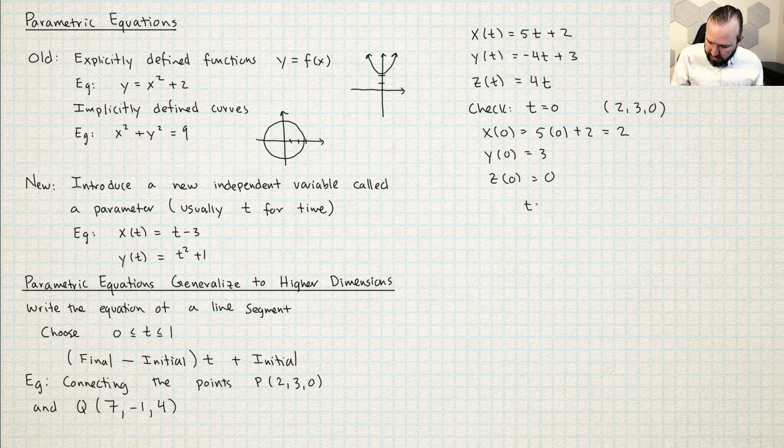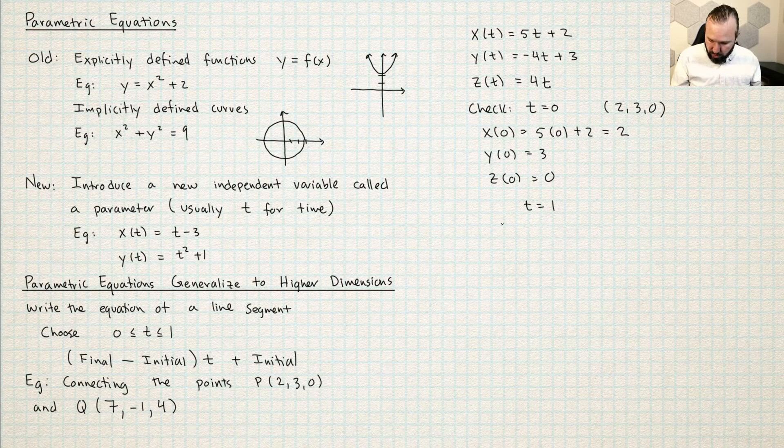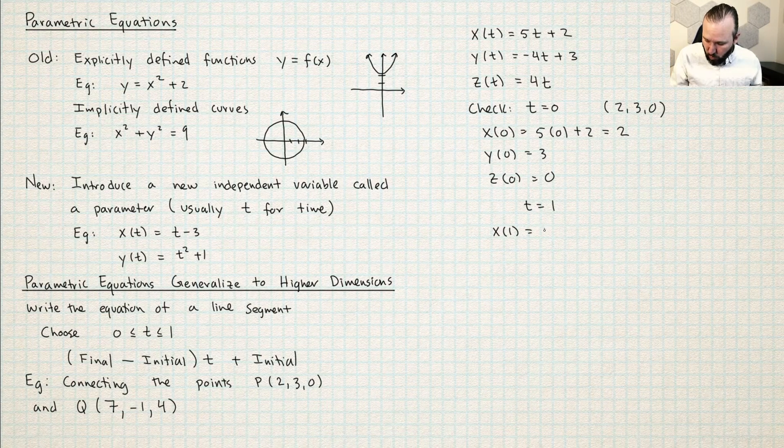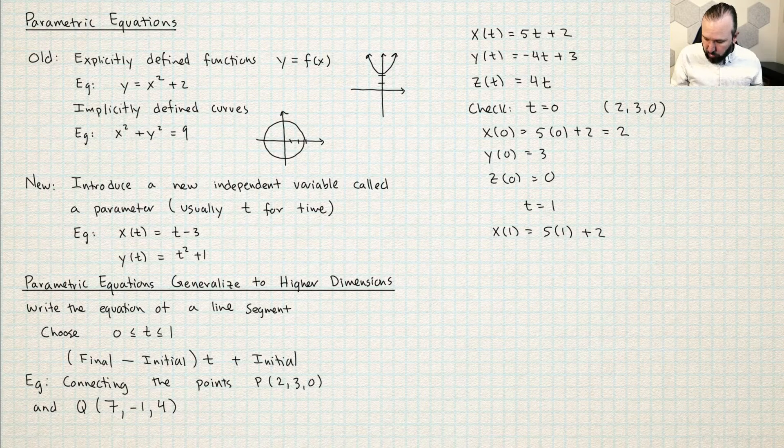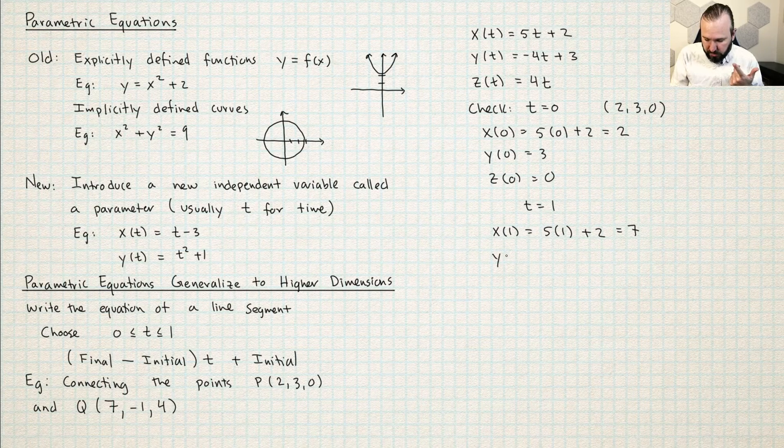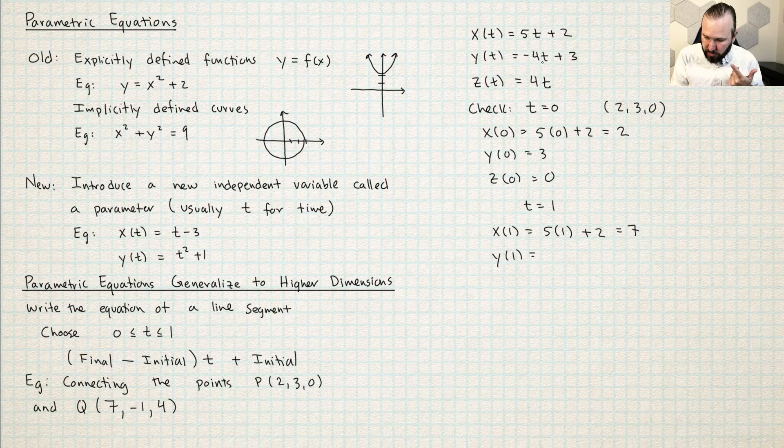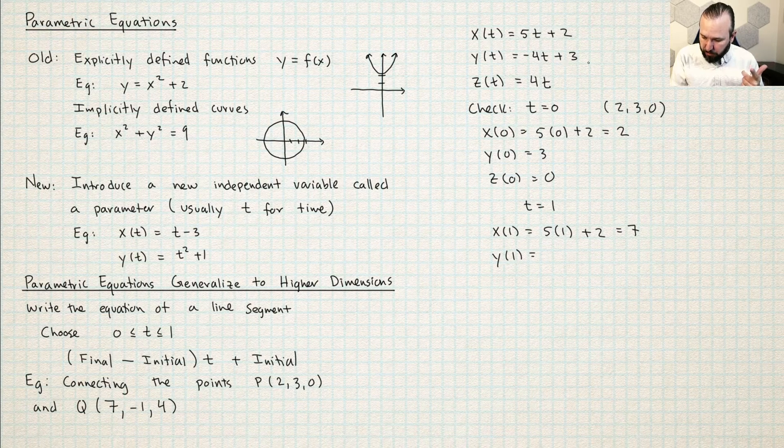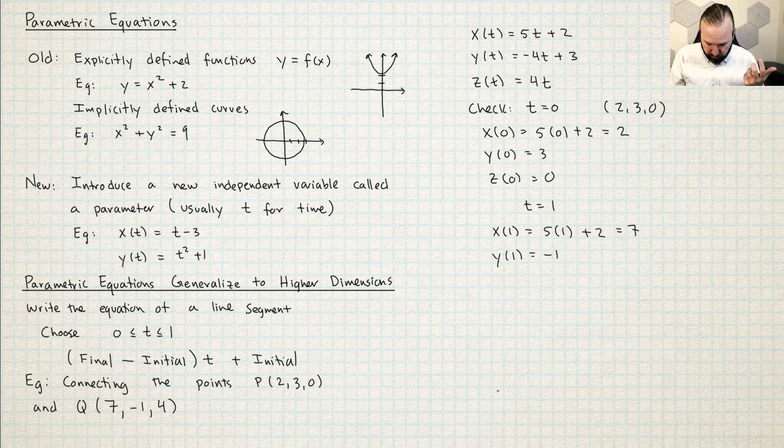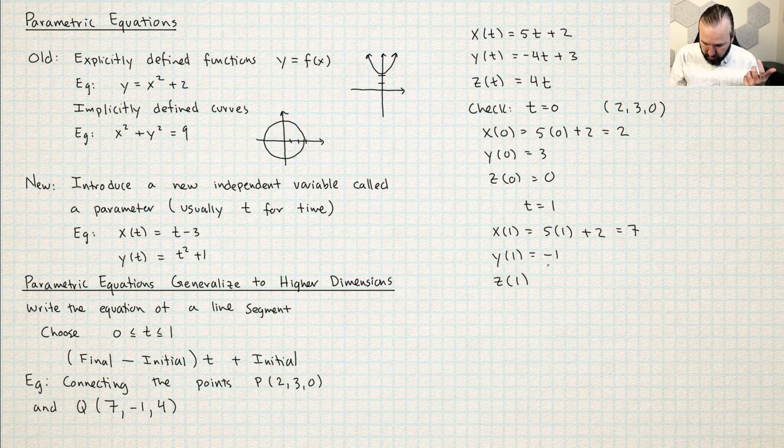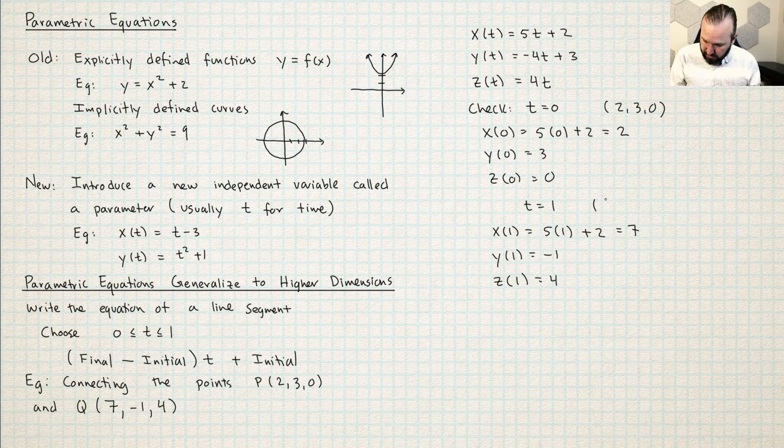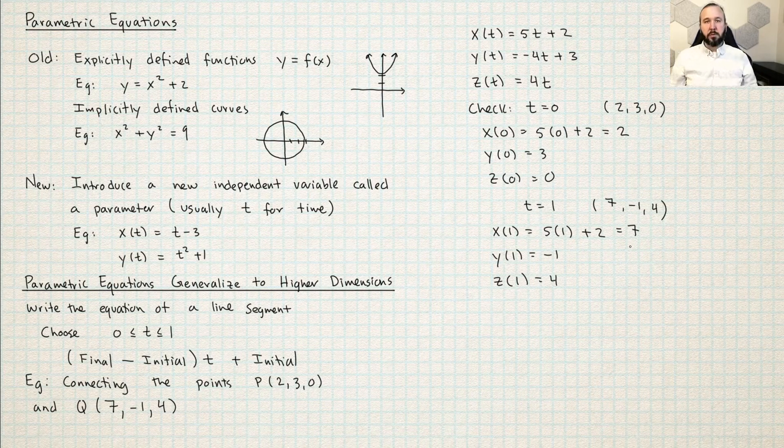What about at time t equals 1? So if I plug 1 into this, then x of 1 will be 5 times 1 plus 2. So 5 times 1 is 5 plus 2 is 7. So I feel like it's working. Let's keep checking. Y of 1 now is going to be negative 4t plus 3. So negative 4 times 1 is negative 4 plus 3 will give me negative 1. Oh, nice. And then z of 1 here is going to be 4 times 1. That's 4. So here I did get at time t equals 1, I did get (7, -1, 4).